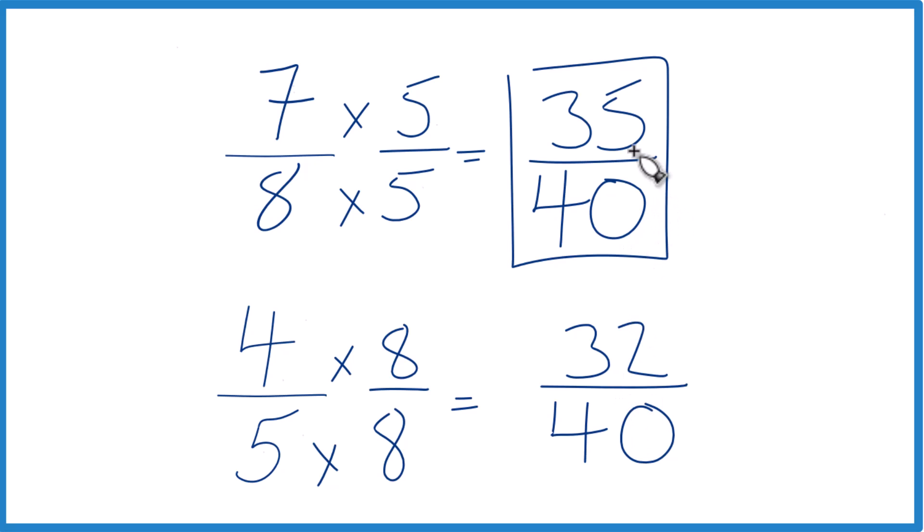So it's not a lot bigger, but it is 3 fortieths greater. And these are the same fraction, they have the same value, just written differently. So because 35 fortieths is greater than 32 fortieths, 7 eighths is greater than 4 fifths.